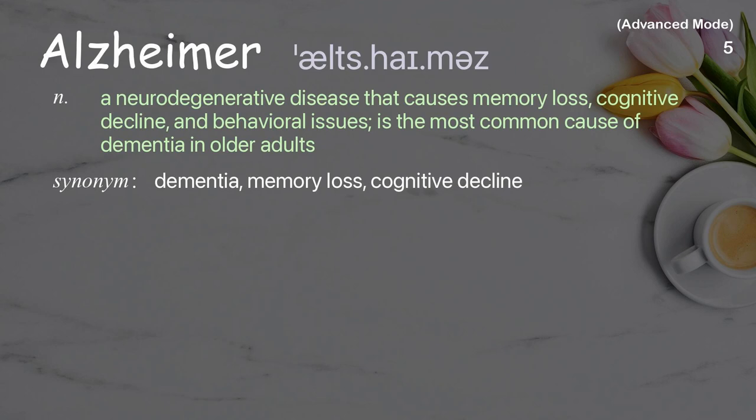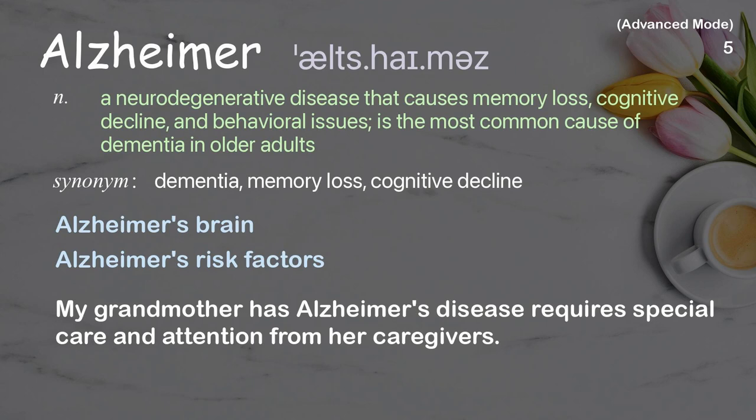Alzheimer's. A neurodegenerative disease that causes memory loss, cognitive decline, and behavioral issues; it is the most common cause of dementia in older adults. Examples: Alzheimer's brain. Alzheimer's risk factors. My grandmother has Alzheimer's disease and requires special care and attention from her caregivers.